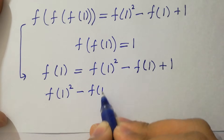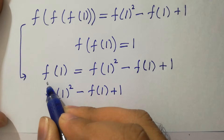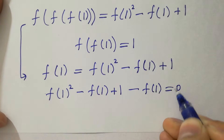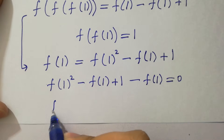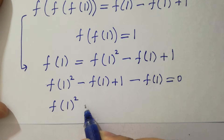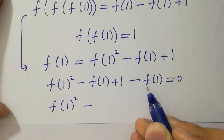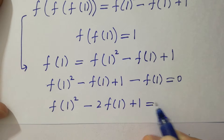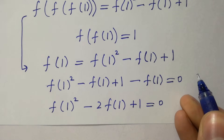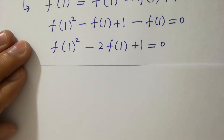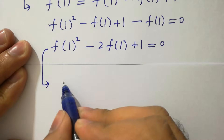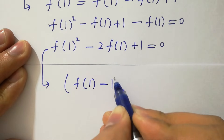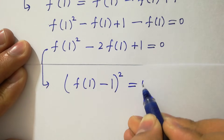So on the right-hand side we have f of 1 squared minus 2 times f of 1 plus 1 equals 0, which is the same as f of 1 minus 1 whole squared equals 0.